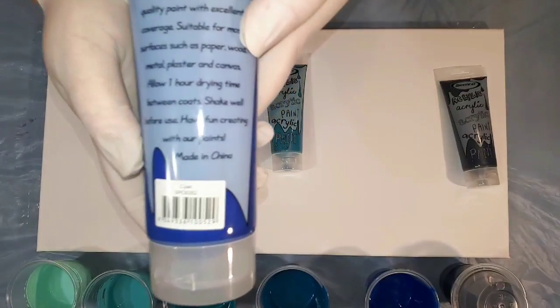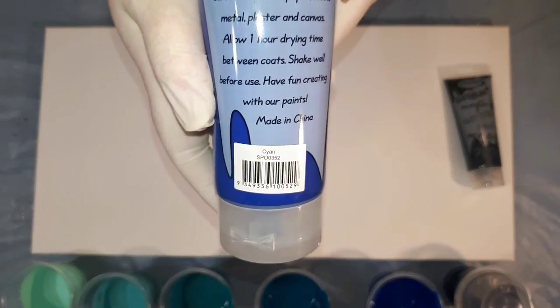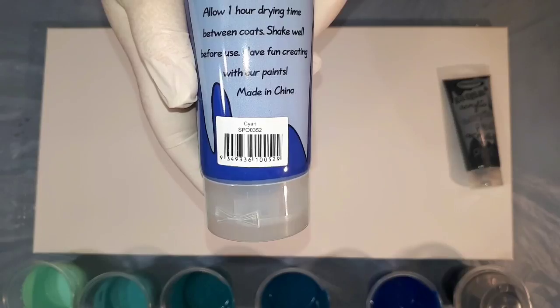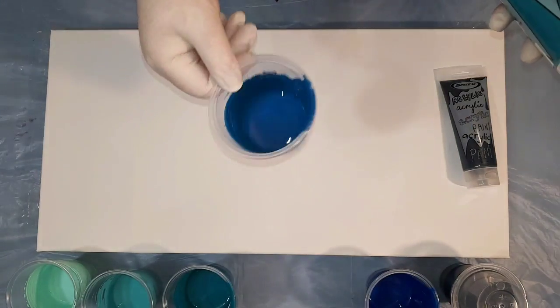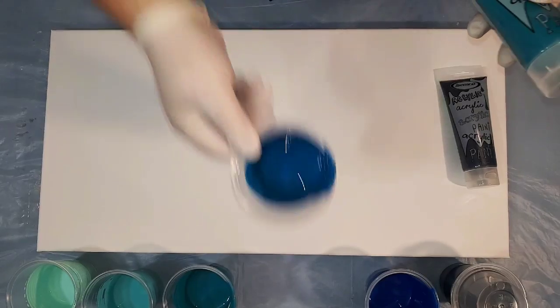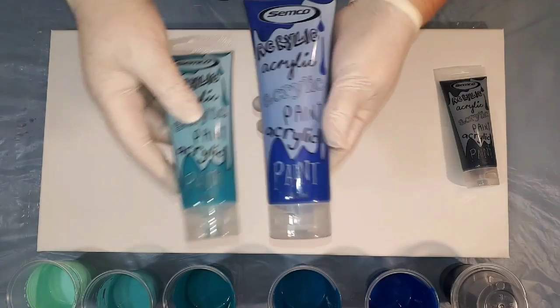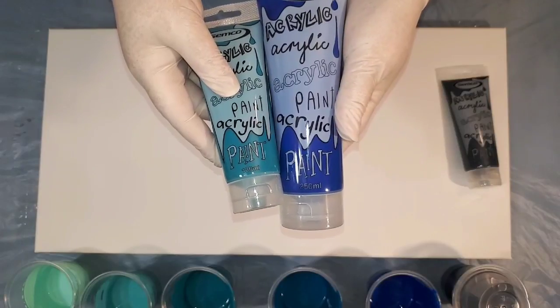This one is Cyan. And because I felt like there was a really big jump from the Turquoise to the Cyan, I added equal parts of these two together to create a color in between.